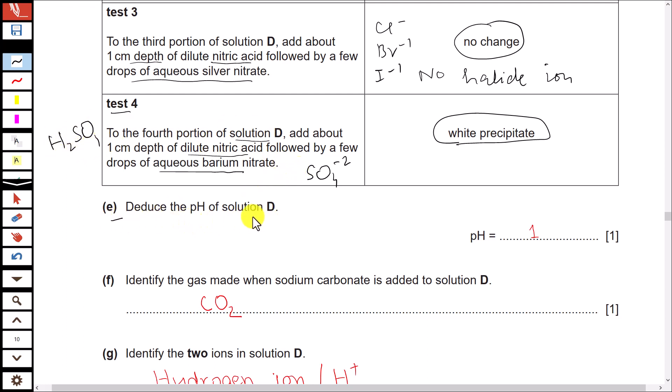Part E: Deduce the pH of solution D. As sulfuric acid is a strong acid, so pH should be around one or two. Part F: Identify the gas made when sodium carbonate is added to solution D. We have already discussed that the gas is carbon dioxide.